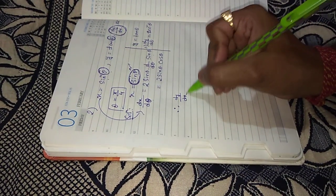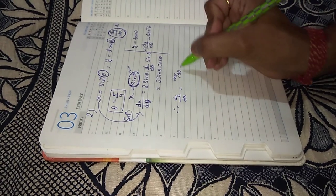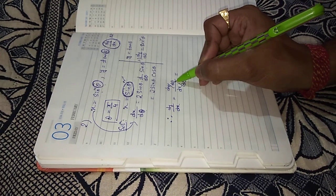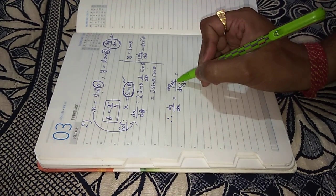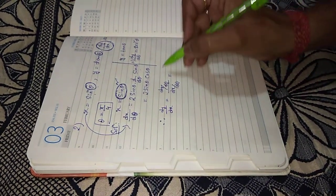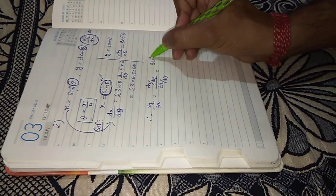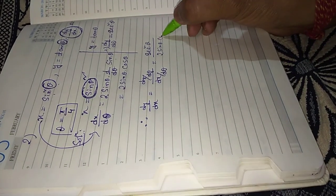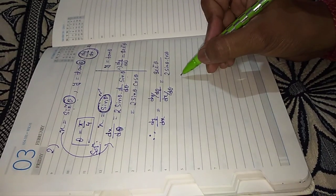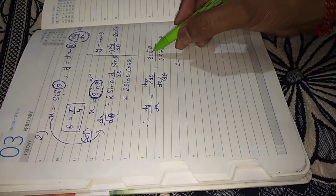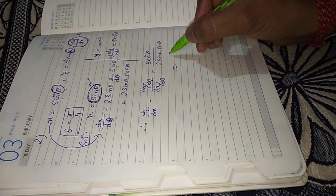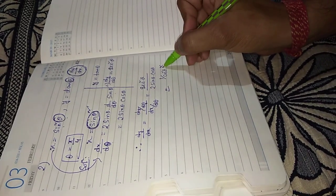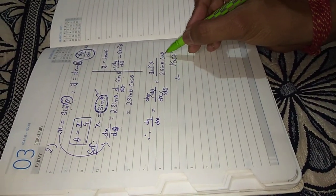Therefore, dy by dx equals dy by d theta divided by dx by d theta. The parameter is theta, so write theta, not t. Put the value of dy by d theta which is sec square theta, by dx by d theta which is 2 sin theta cos theta. This equals sec square theta, which can be written as 1 by cos square theta, times 2 sin theta cos theta.